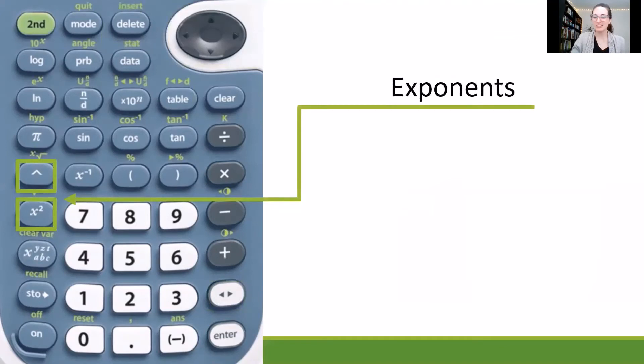For exponents, you'll see we have two buttons. First of all, we see the x squared button. So if you are just squaring a number, you can type the number, for example, seven, and then hit the x squared, and it will give you seven squared.